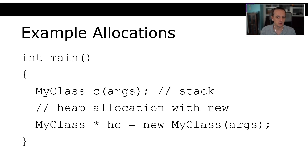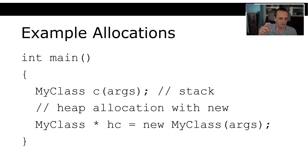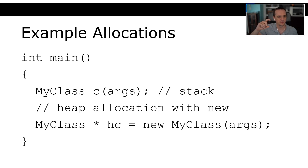The same applies to custom classes. If I allocate a class as `MyClass c(args)` — that class is allocated on the stack. Or I can heap-allocate it: `MyClass* hc = new MyClass(args)` — that instantiation lives on the heap instead. So that's how you choose: memory on the stack versus memory on the heap.